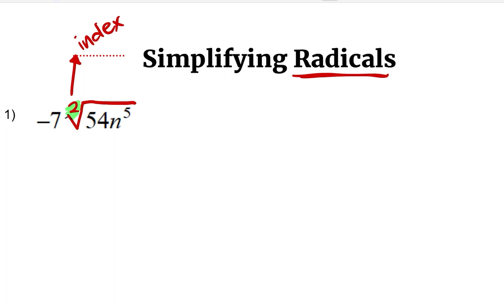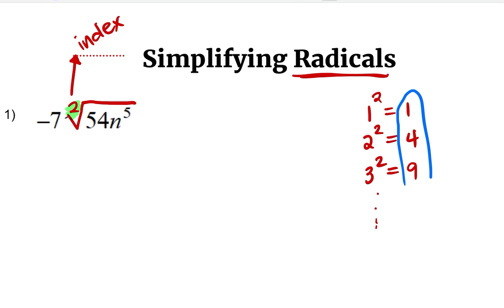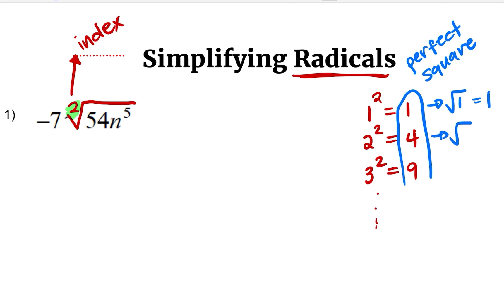Because the index is two, we are going to think about perfect square numbers. We start with: one squared is one times one, which is one. Two squared is four. Three squared is nine. And this continues. These numbers are what we call perfect square numbers. Why? Because when we take the square root of each of these numbers — square root of one is one, square root of four is two, square root of nine is three — they are perfect square numbers.